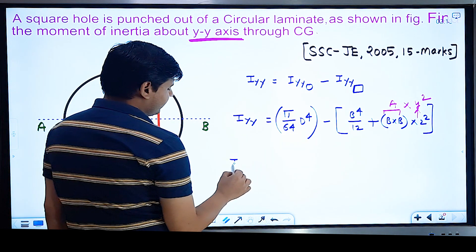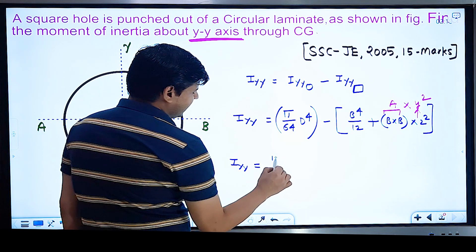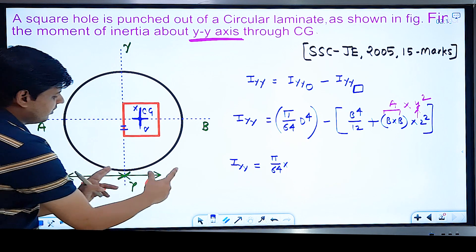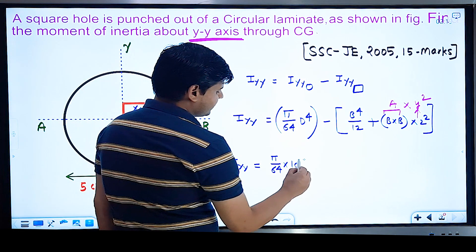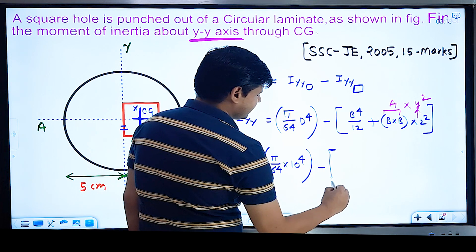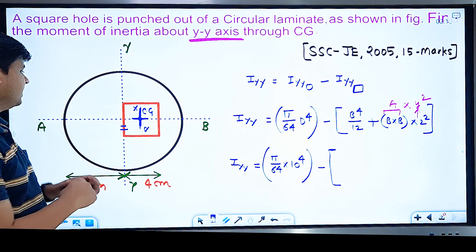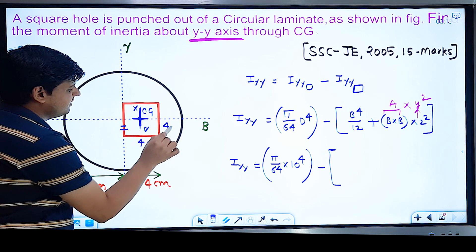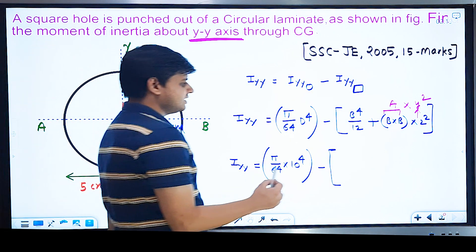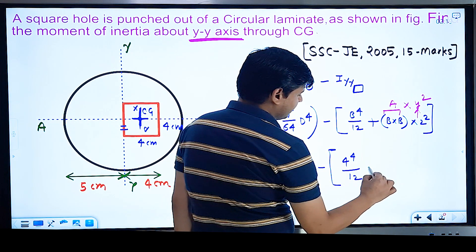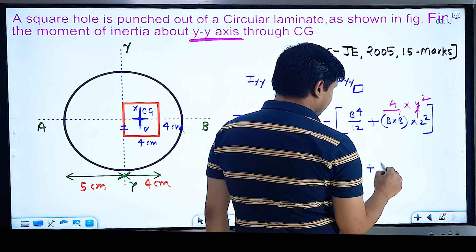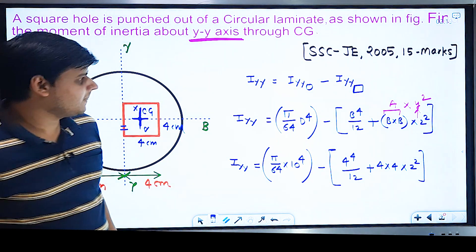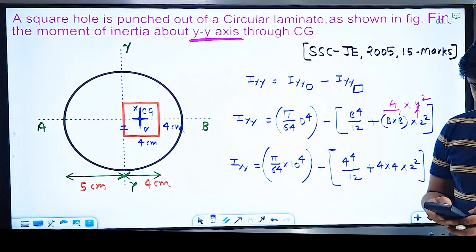Now computing: moment of inertia about Y-axis = π/64 × D⁴ − (B⁴/12 + B·B·y²). The circle diameter D = 10 cm (radius 5), so 10⁴. The square side B = 4 cm. The distance y from the square's CG to the Y-axis: total distance is 4 cm, half is 2 cm, so y = 2 cm.